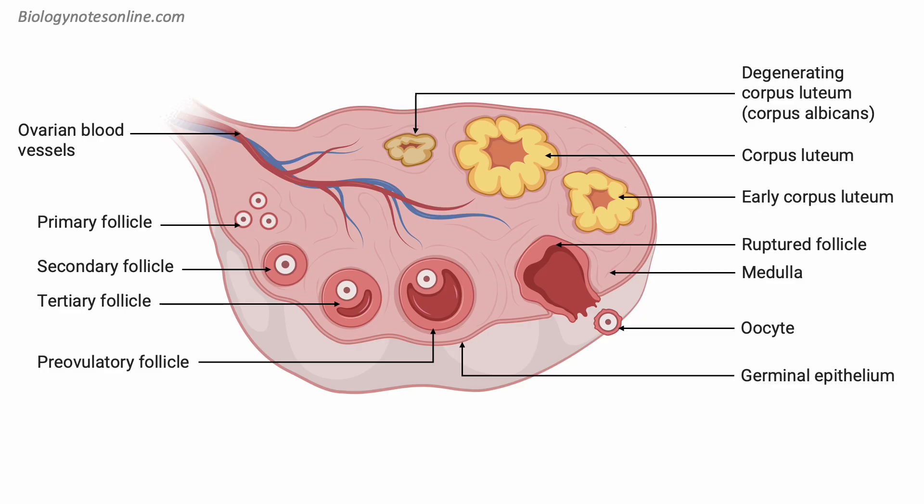So, that's a brief overview of the ovary's anatomy. Remember, this incredible organ plays a vital role in female reproduction by producing eggs and hormones.